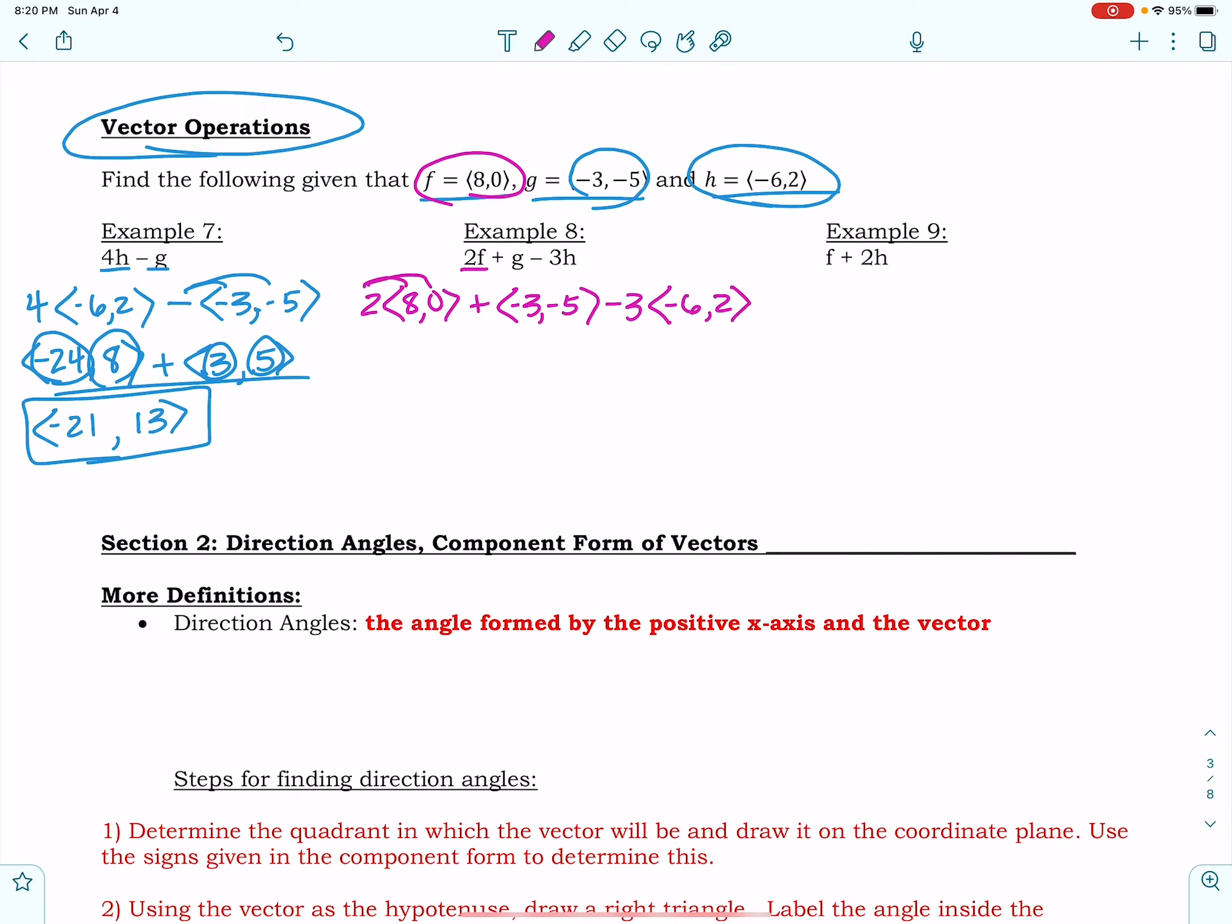This gets distributed, so I've got 16 and 0 plus negative 3, negative 5 plus negative 3 times negative 6 is negative 8—ooh, Miss Griggs, I'm out of control—positive 18, negative 3 times 2, negative 6. Okay,